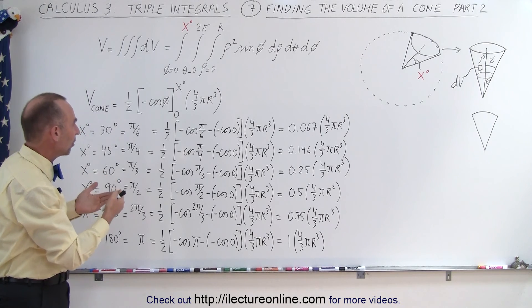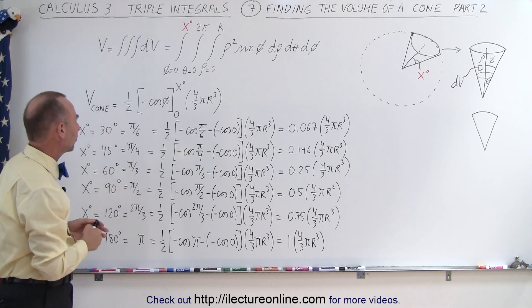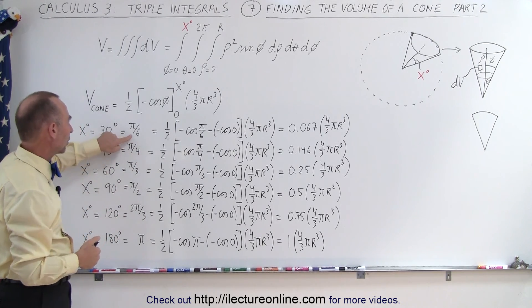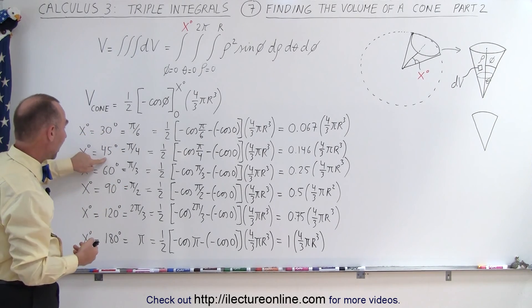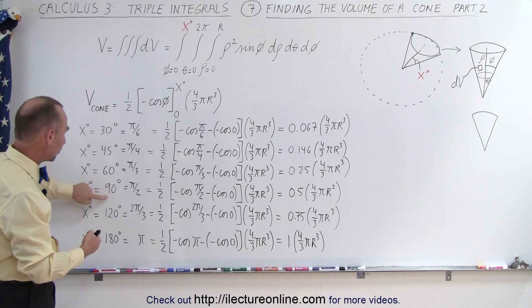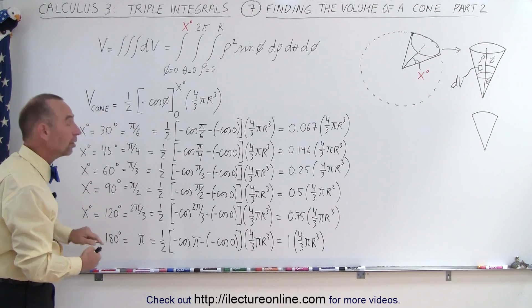So here I've drawn some of the various options that we have or the various angles we may want to consider. We can have x to be the 30 degree angle that we saw last time or 45 or 60 or 90 or 120 or 180 degrees.